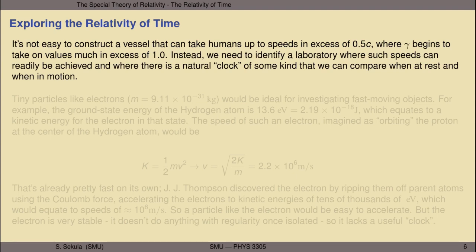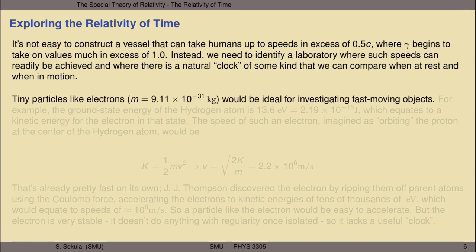Instead, what we need to do to test the claims of special relativity is to identify a laboratory where such speeds can be readily achieved, but also one where there's a natural clock of some kind—a regular sequence of events whose timing can be well predicted—so that we can compare those things when they're at rest to when they are in motion.